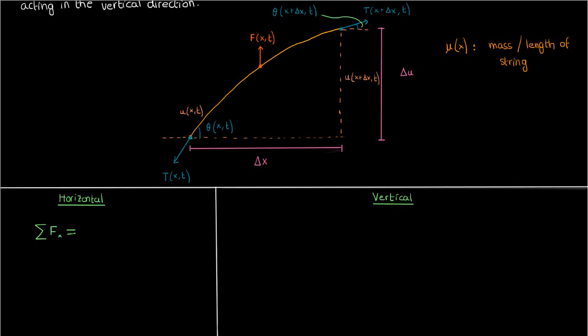Since the tension is the only horizontal force on this little string segment, we only have to find the horizontal components of the tension force to balance the horizontal forces. And if you compute the horizontal forces, you'll have the tension times the cosine of the angle at the right end of the string segment, equal to the tension times the cosine of the angle at the left end of the string segment.